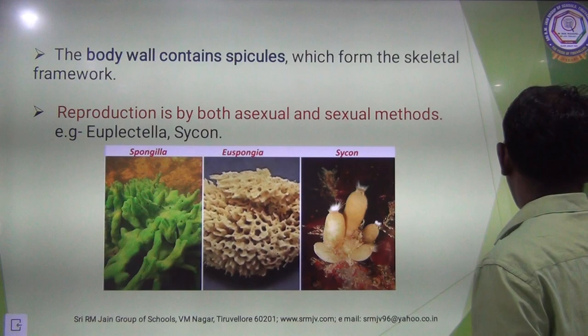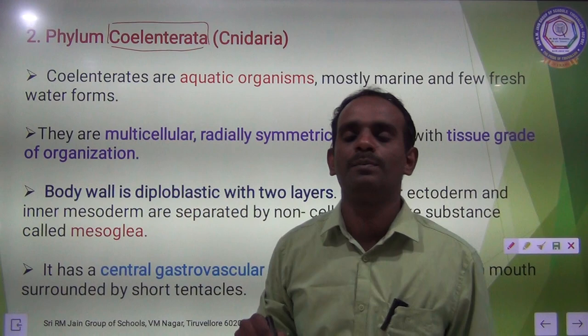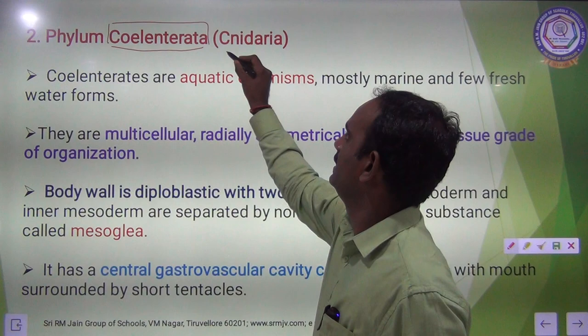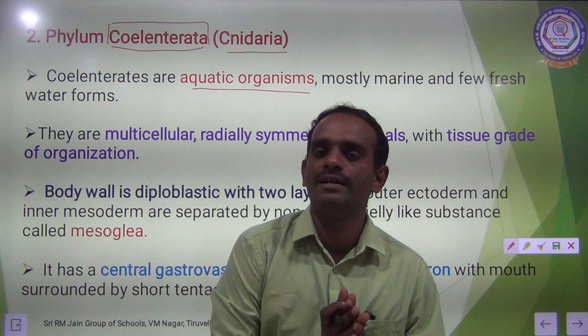We now move on to the second phylum — Phylum Coelentrata. The pronunciation and spelling are quite different. Phylum Coelentrata — another name is Cnidaria. The Coelentrata are aquatic organisms, meaning these animals live only in water. They are mostly marine — living in the sea or ocean — and very few are freshwater forms.